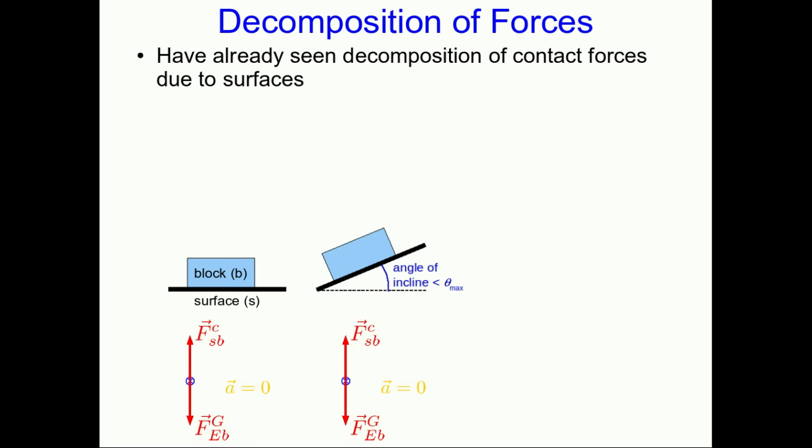We've already seen one example of decomposition of forces, because in an earlier lecture we looked at how when a block is sitting on a surface, the contact force up on it is equal in magnitude but opposite in direction to the gravitational force down on it. And we know that because the object isn't accelerating, and so the vector sum of forces has to be zero. And it doesn't matter whether the surface is horizontal or tilted, that still has to be true. But we also saw that when the surface is tilted, we can think of that contact force as being split into two pieces, a perpendicular force and a frictional force.